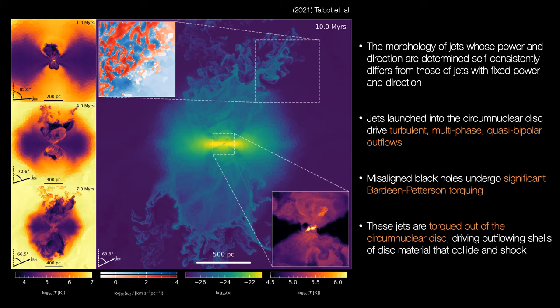This is particularly obvious in the case when the black hole spin is initially directed straight into the circumnuclear disk. As we can see here, these jets drive turbulent, multi-phase, quasi-bipolar outflows and they undergo Bardeen-Petterson torquing causing them to emerge from the circumnuclear disk.